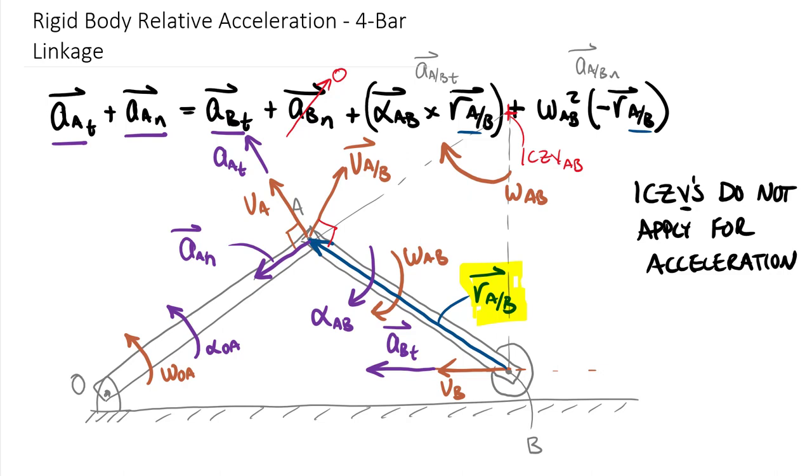So if we cross that into the screen, into the direction of that R vector, we end up with a relative tangential. Now we're going to slide this vector over here below. So this would be an acceleration of A relative to B tangential in that same direction up to the right as my velocity of A relative to B. Once again, also perpendicular to that blue position vector.